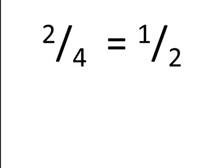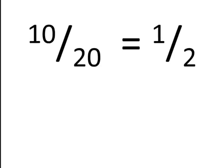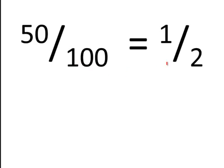Simplifying fractions. How do you go from 2 fourths to 1 half? How is it that you go from 10 twentieths to 1 half? They're equivalent fractions. What that means is if you were to divide 2 into 1, you get 0.5. And if you were to divide 20 into 10, you'd get 0.5. So they're the same amount of stuff. But how do you simplify 50 one-hundredths to be 1 half, the equivalent fraction?